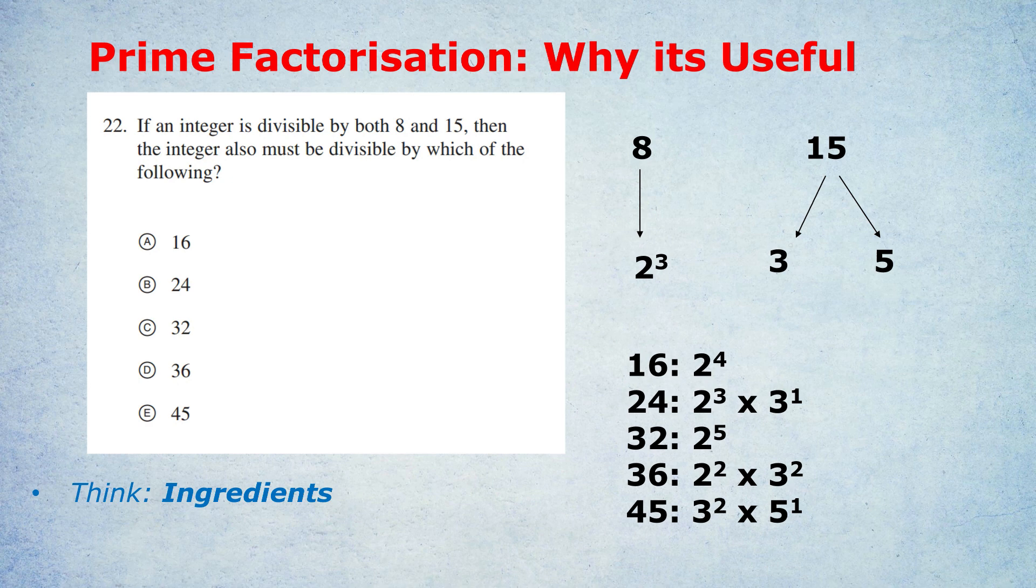Quick demonstration. A number like 32 is wrong because it has 5 twos, and we can't guarantee having 5 twos. 36 is wrong because it's got 2 threes, and we can only guarantee that we've got 1 three. And 45 has 2 threes again, and we can only guarantee that we've got 1 three. Notice the word must in the question. Because it was a must, we must be able to guarantee having enough ingredients. Our integer might possibly be divisible by all 5 of those numbers, but we can only guarantee that it's divisible by B, 24.